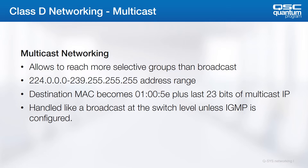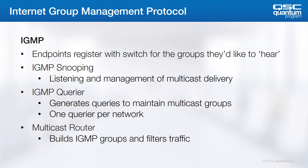Multicast is typically used for device discovery, such as Q-SYS device discovery, and multi-destination media streaming that requires a lot of bandwidth. If these media streams were broadcast, they would bog down the entire network. Making them multicast streams helps manage the bandwidth used and ensures they only go to the right places.